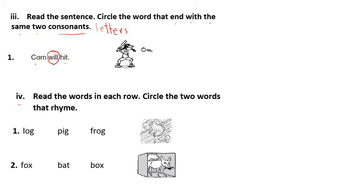Now this part number four. Read the words in each row. Circle the two words that rhyme. Remember, words that rhyme have the same ending sound.